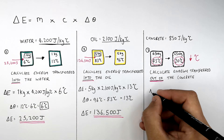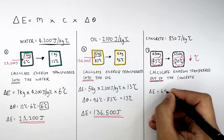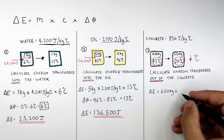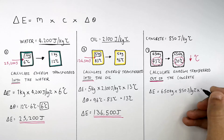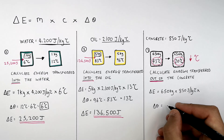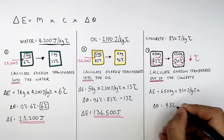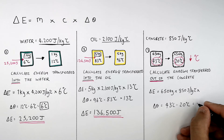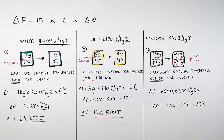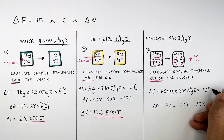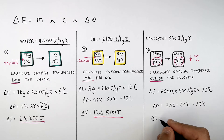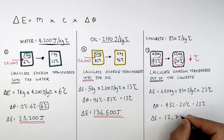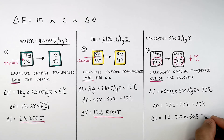To calculate the energy transferred out of the concrete, multiply the mass of 650 kilograms by the specific heat capacity of concrete, 850 joules per kilogram per degree Celsius, multiplied by the temperature change. The temperature change is 43 minus 20 = 23°C. So 650 × 850 × 23 gives the energy transferred from the thermal energy store of the concrete to its surroundings, which is 12,707,500 joules of energy.